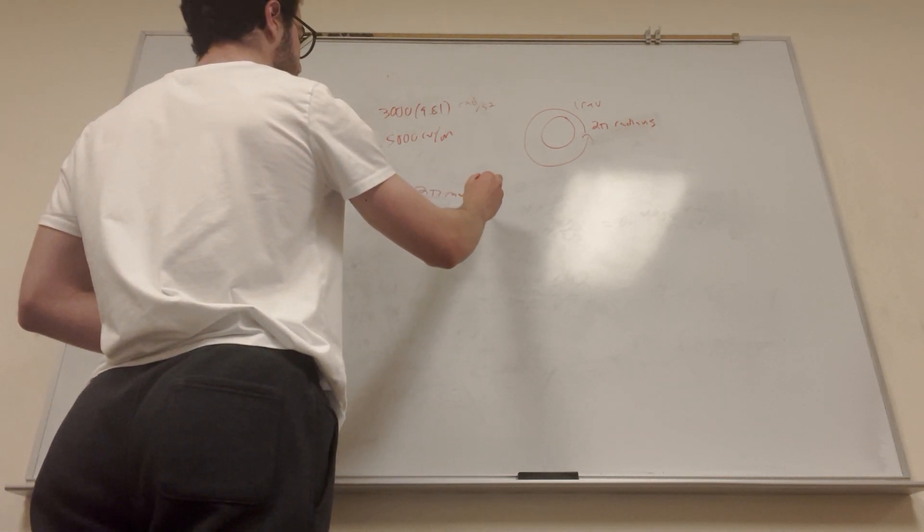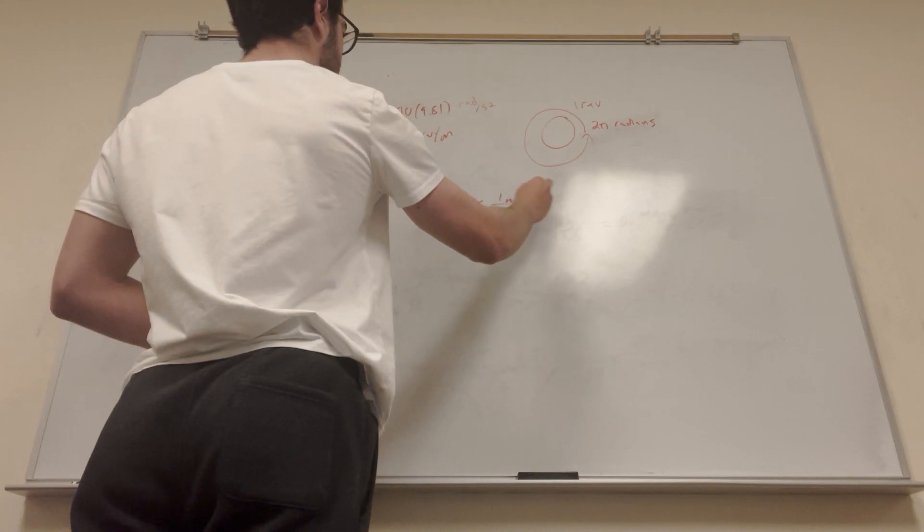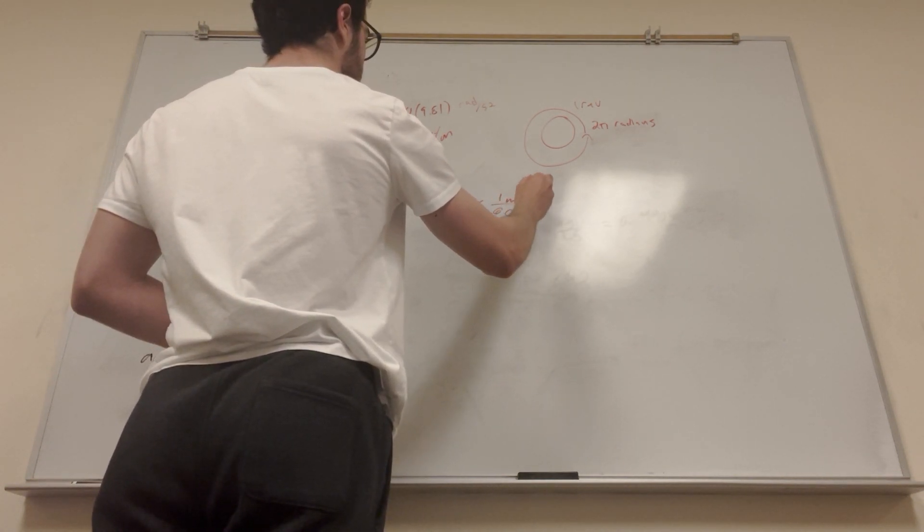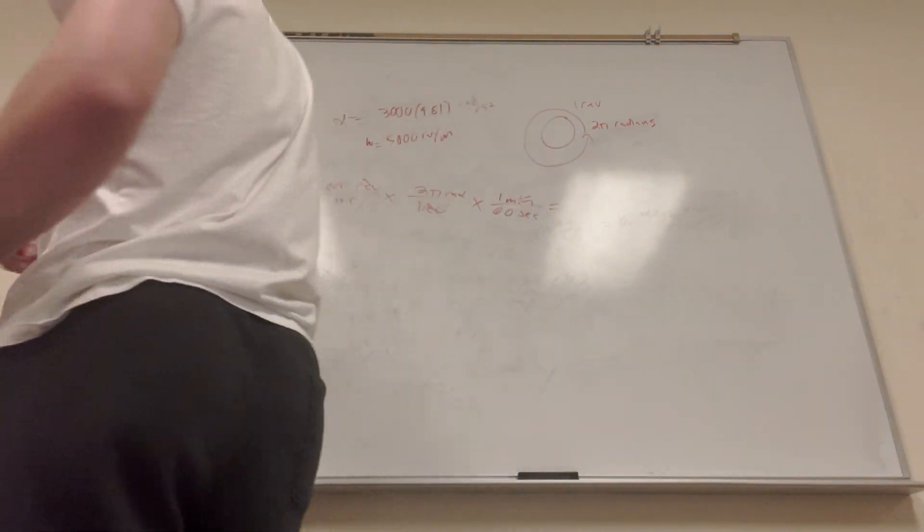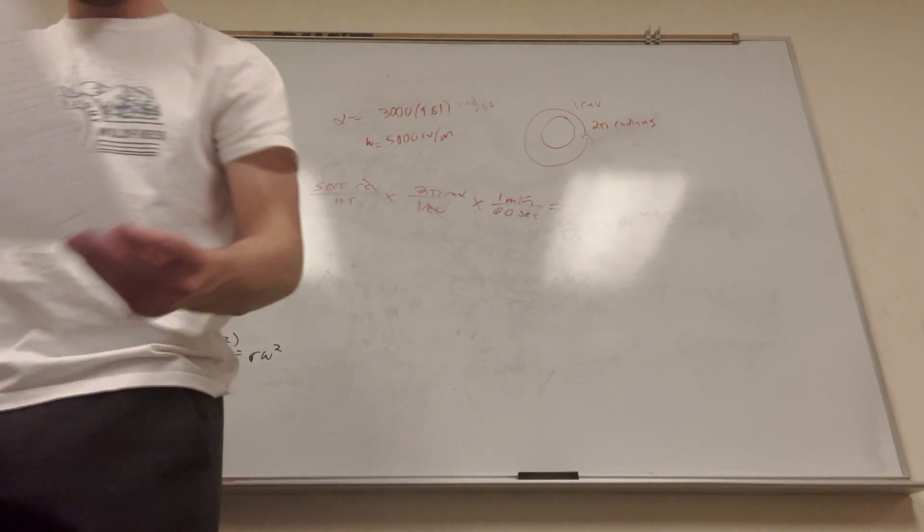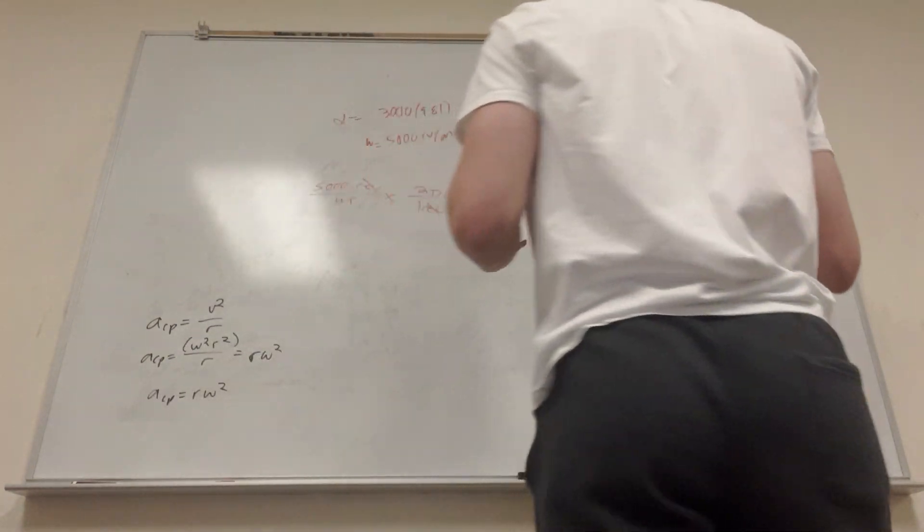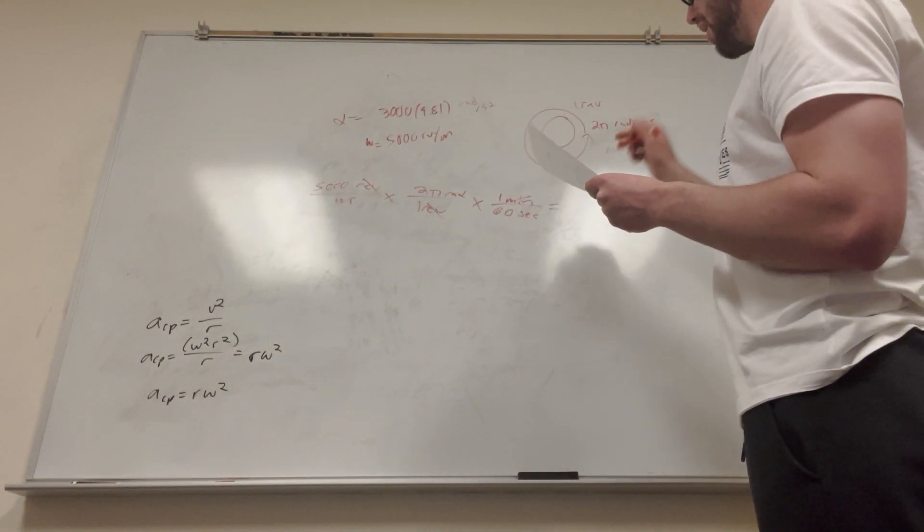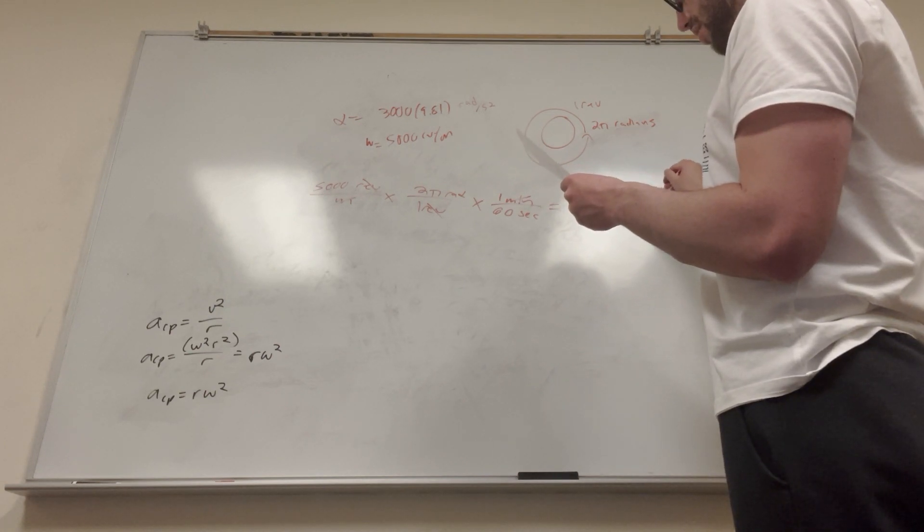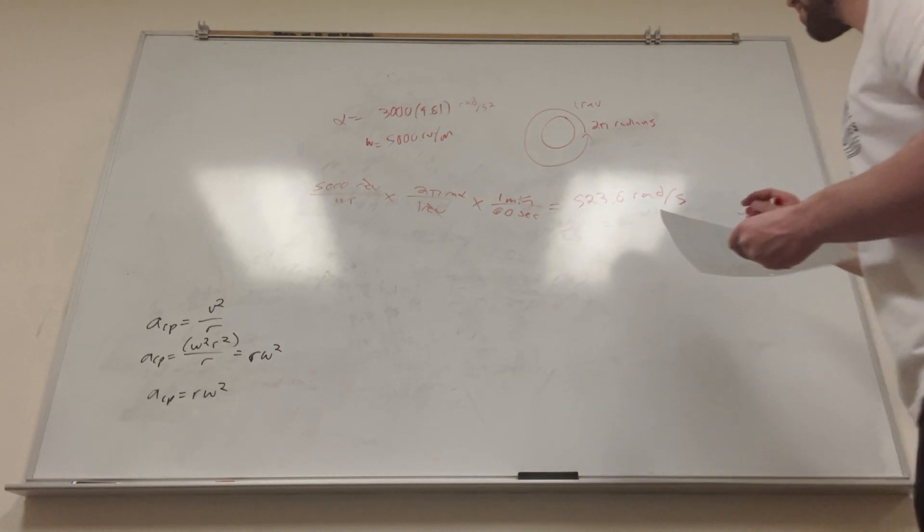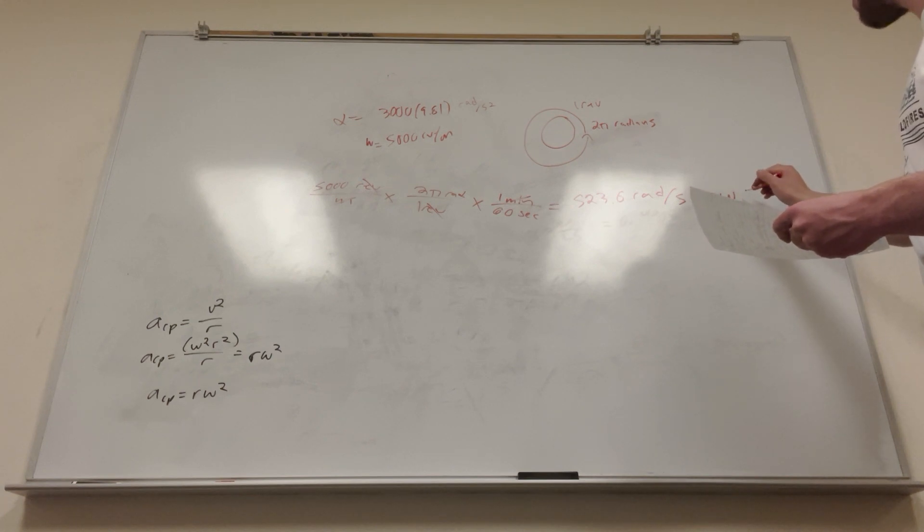But then we're going to have to divide that minute by 60 seconds to cancel out the minutes. And then what we're going to get here is a number. This is going to be 523.6 radians per second. This is our angular velocity.